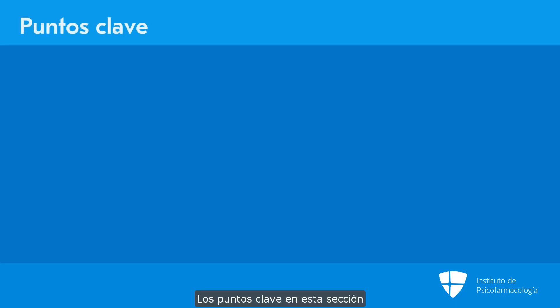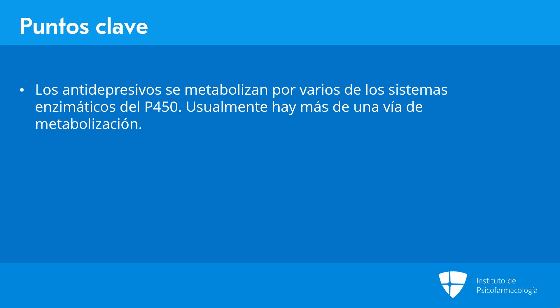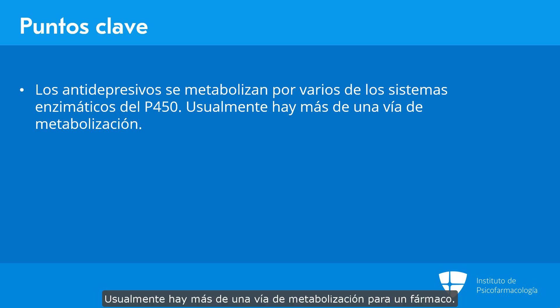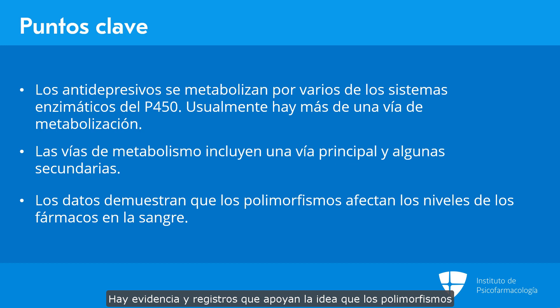The key points in this section are: antidepressants are metabolized by many enzymes in the P450 system; there is usually more than one pathway of metabolism, consisting of a major pathway and some minor ones; and there is data supporting that polymorphisms affect the blood levels of medications.